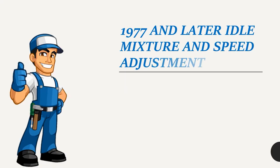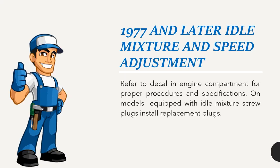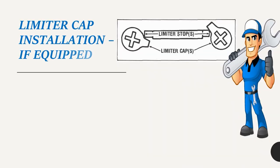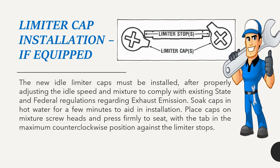1977 and later idle mixture and speed adjustment: Refer to decal in engine compartment for proper procedures and specifications. On models equipped with idle mixture screw plugs, install replacement plugs. Limiter cap installation (if equipped): The new idle limiter caps must be installed after properly adjusting idle speed and mixture to comply with state and federal exhaust emission regulations. Soak caps in hot water to aid installation, then place caps on mixture screw heads and press firmly with tab in maximum counter-clockwise position against limiter stops.